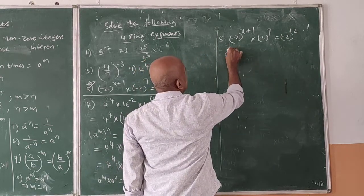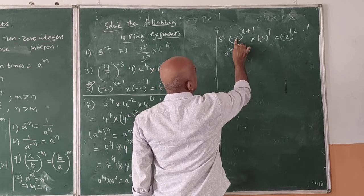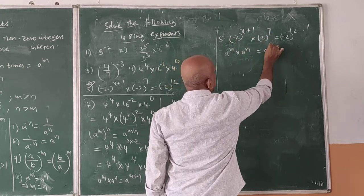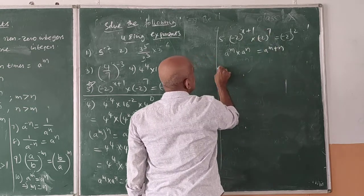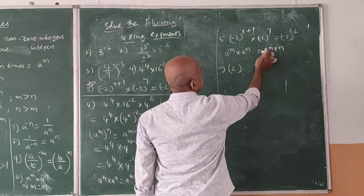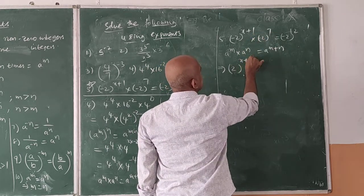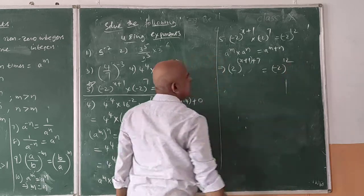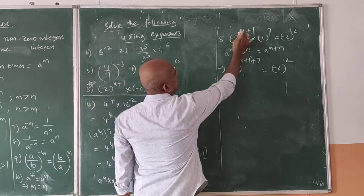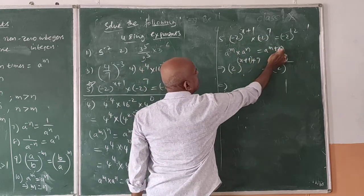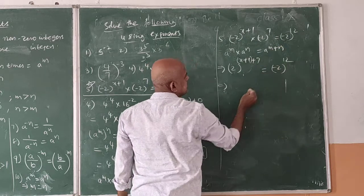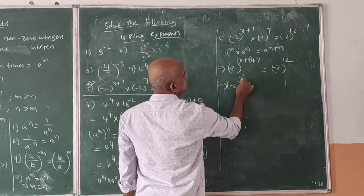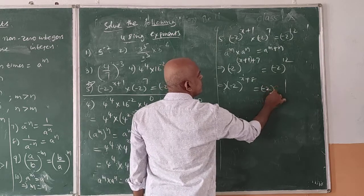We apply a to the power of m into a to the power of n equals a to the power of m plus n. Since the bases are the same, powers are added: x plus 1 plus 7, which is x plus 8. So we get minus 2 to the power of x plus 8 equals minus 2 to the power of 12.